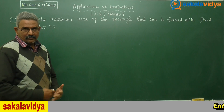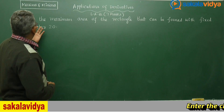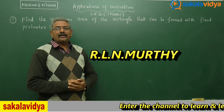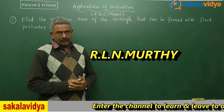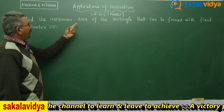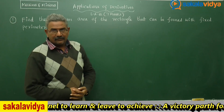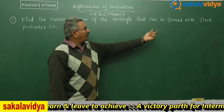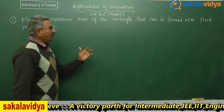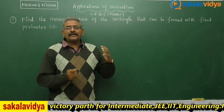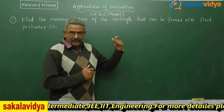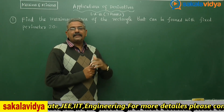Let us solve another problem on applications of derivatives, that is maxima and minima. The question is: find the maximum area of the rectangle that can be formed with a fixed perimeter of 20. So we need to find the maximum area of a rectangle whose perimeter is given as 20, which is constant.